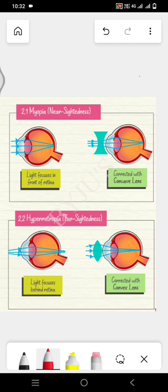How can we treat this defect? How can we correct it? We have to use the concave lens for treating the defect of myopia.